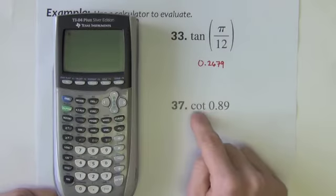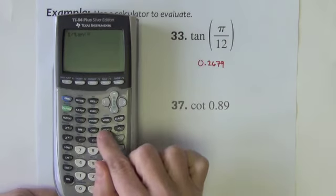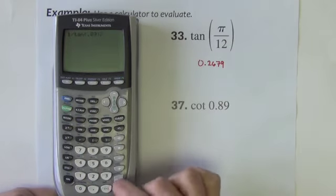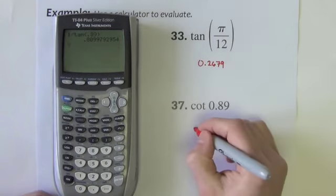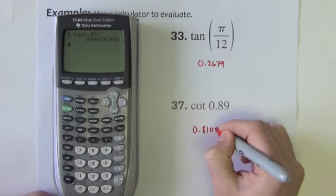So I'm already in radian mode. I want cotangent which is the reciprocal of tangent. So it's one divided by tangent. So one divided by tangent of 0.89. Again I'll use four decimal places would be 0.8100.